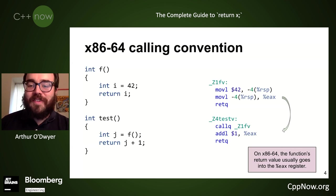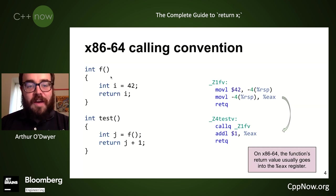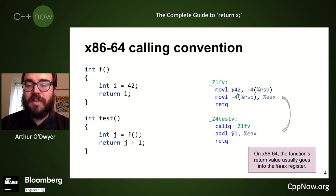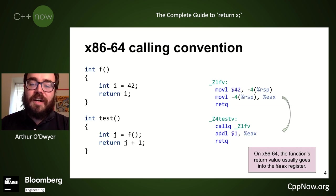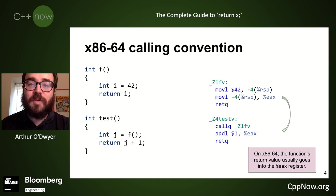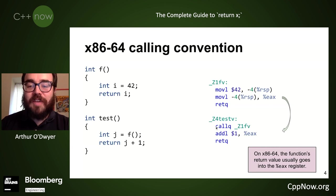I'm an x86-64 chauvinist so when I do assembly code it's going to be x86-64, but there won't be much of it after the first bit. Here I have a function f that returns an integer — i is a stack variable initialized with 42. We're putting 42 onto the stack and then returning i. In this calling convention we put it into the return register eax, and it comes back to our caller in that register.